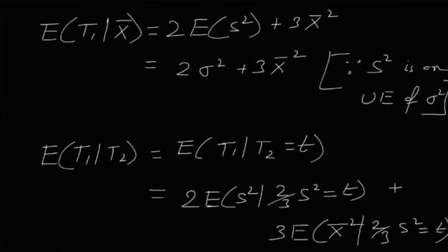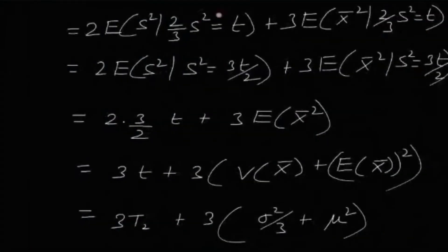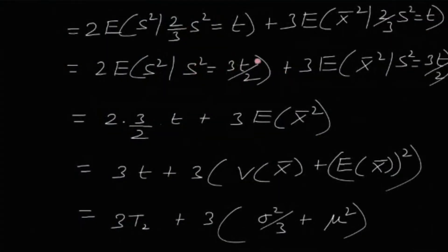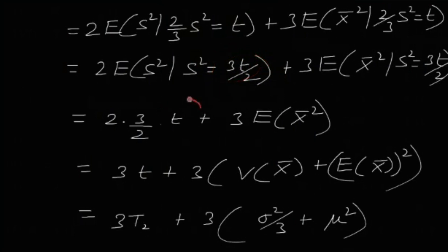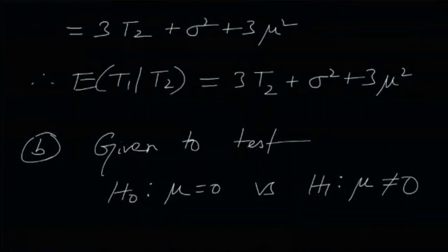This was straightforward. All we needed was to write t1 and t2 in terms of S² and x̄, and the rest follows easily. One key point: since t2 = (2/3)S² is given as T, S² = 3T/2, not T. So the expectation outputs 3T/2, not T, and multiplying by 2 gives 3T. Part one is now complete.